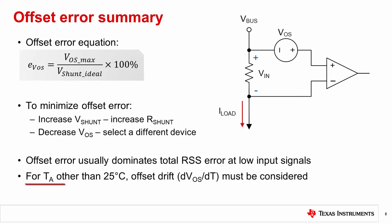Number five, for ambient temperatures other than 25 degrees C, offset drift must be considered.